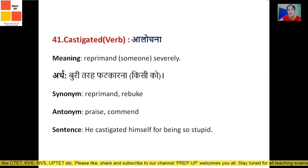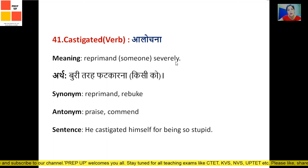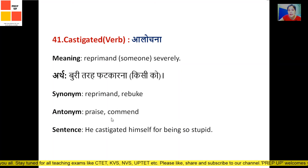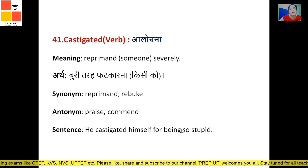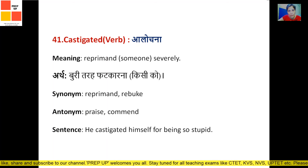Next word is 'castigate,' which is a verb. It means 'arlochna' — to reprimand severely, to openly rebuke someone. Synonyms are reprimand and rebuke. Antonyms are praise and amend. Sentence: 'He castigated himself for being so stupid' — meaning he himself reprimanded himself for being so stupid.